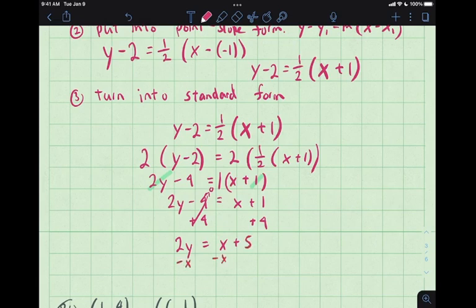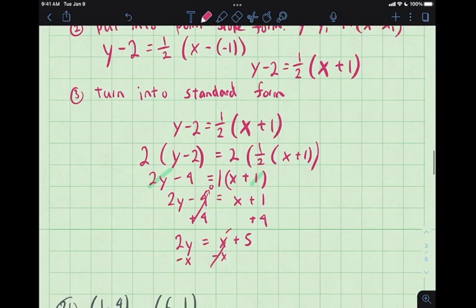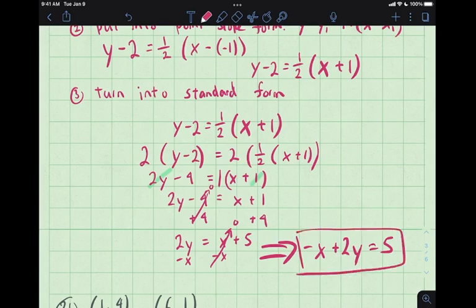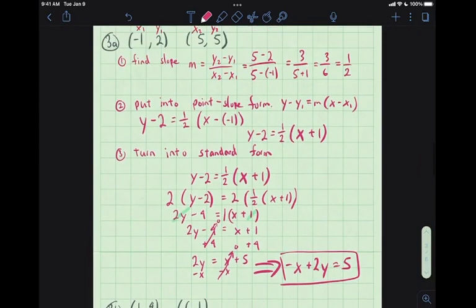Left with 2y equals x plus 5. Take away x from both sides. That makes 0. So, just so I save some space. We have now our standard form. Negative x plus 2y equals 5. A lot of work for these problems. Three steps though. Find slope. Put in the point-slope form. Then turn point-slope into standard form. I guess you should see some patterns in the conversion from point-slope into standard form.